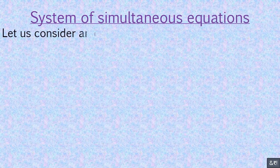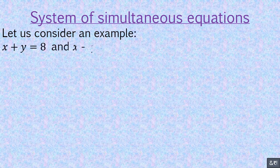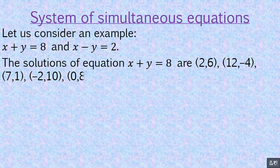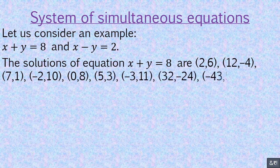Let us consider an example: x plus y equals 8 and x minus y equals 2. The solutions of equation x plus y equals 8 include ordered pairs such as (2, 6), (12, -4), (4, 7), (1, -2), (10, -2), (0, 8), (5, 3), (-3, 11), (32, -24), (-43, 51), and so on.